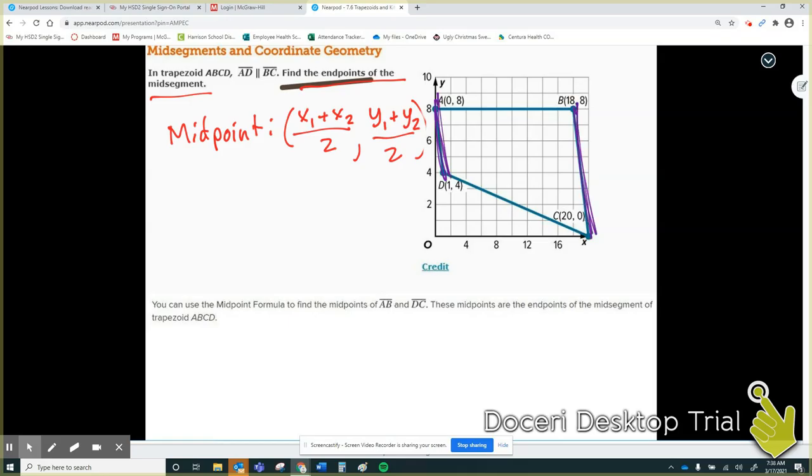So I know that my mid-segment needs to be parallel to the other two bases of my rectangle. Meaning, in order to find the mid-segment, I need to find the midpoint of these two and the midpoint of these two. Once I find those and connect them, I should have myself a mid-segment. We will use the midpoint formula where we add our two x values and divide by two, and then add our two y values and divide by two. So let's do that for A and B first.